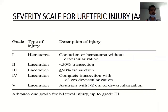Ureteric injury is graded into five grades by the American Association for the Surgery of Trauma. Grade 1 includes contusion or hematoma without devascularization. Grade 2 includes laceration causing less than 50% transection. Grade 3 involves laceration with greater than 50% transection but not complete. Grade 4 includes complete transection with less than 2 cm of devascularization. Grade 5 includes avulsion injury with greater than 2 cm of devascularization. In case of bilateral injury, we advance one grade up to grade 3 injury.